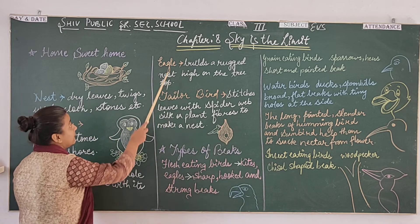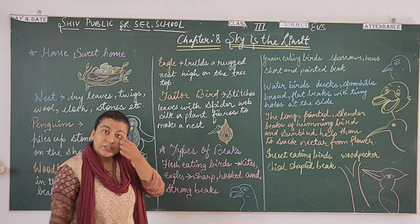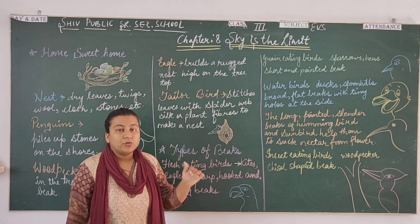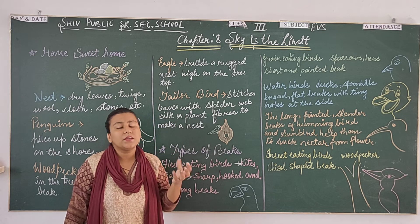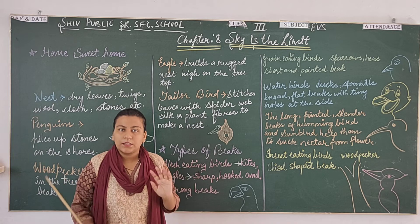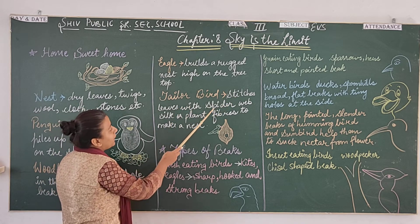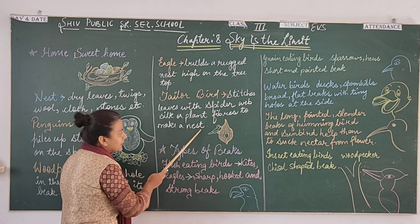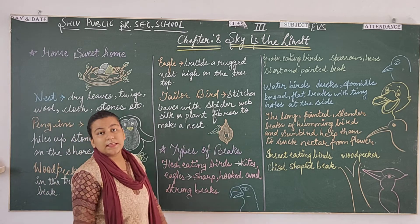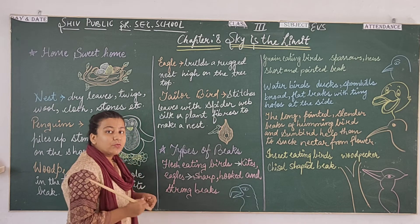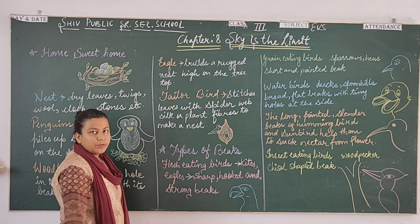The next example is Eagle. Eagle builds a large nest high on the tree top. Eagle is a bird whose nest is built high up. The tailor bird does stitching on the leaves - it puts thread through the leaves, like this, and places the leaves on a stick.